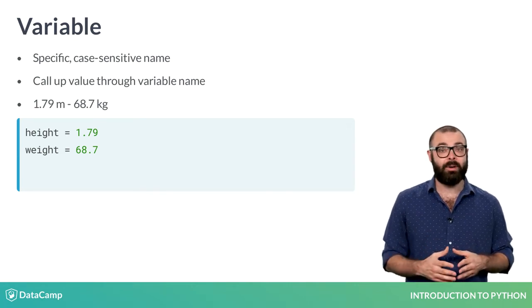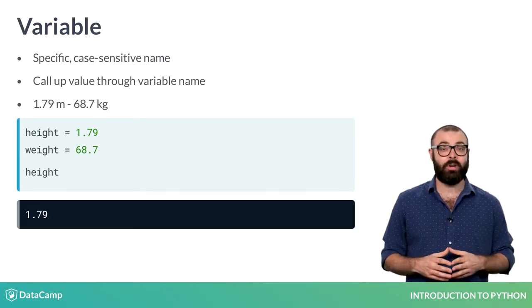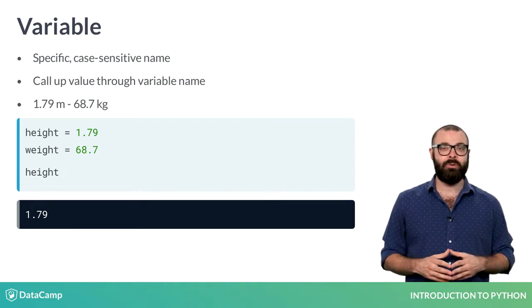If you now type the name of the variable height, Python looks for the variable name, retrieves its value and prints it out.